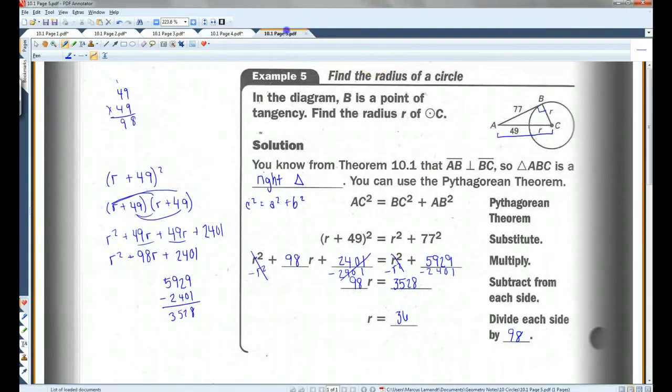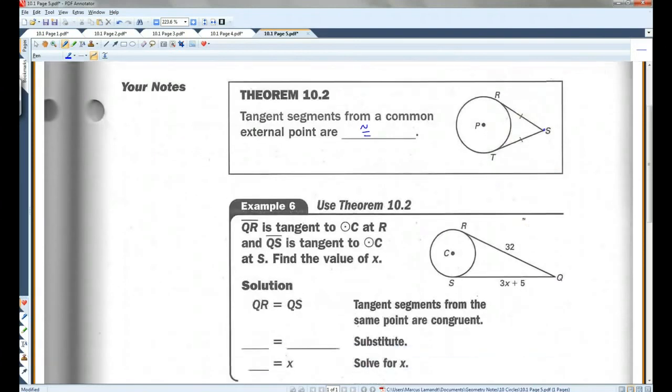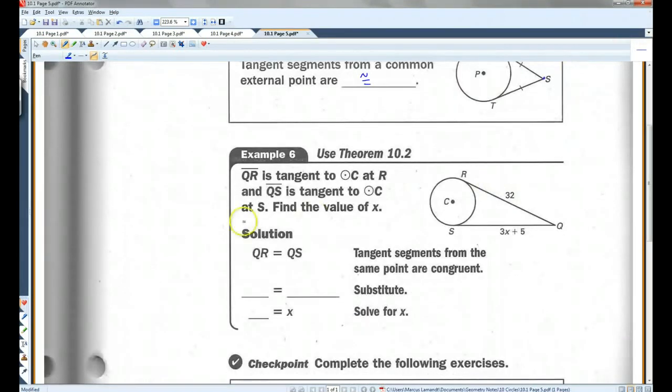Last page. Tangent segments from a common external point are congruent. So anytime you have two tangent lines intersecting, the segments they make are congruent to each other. So for example, QR is tangent to circle C at R, and QS is tangent to circle C at S. Find the value of X. The theorem we just learned says that these segments are congruent.